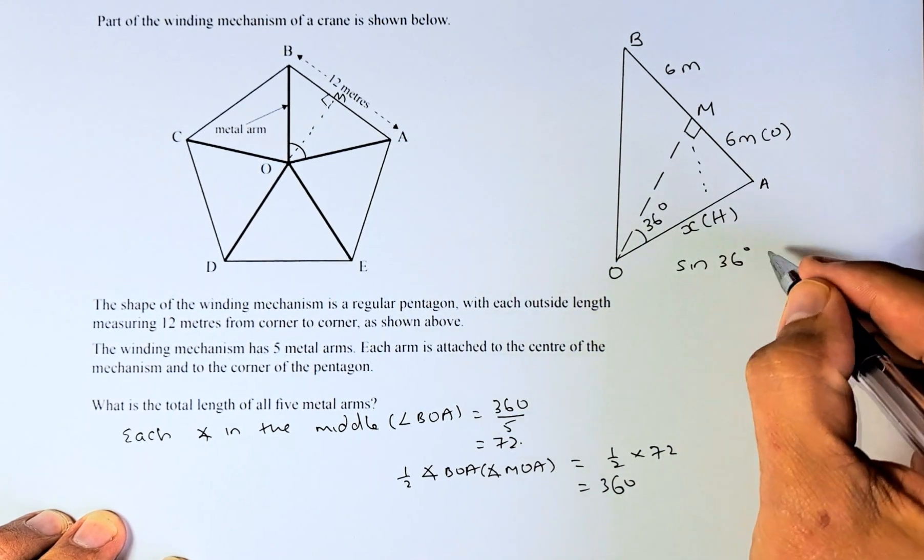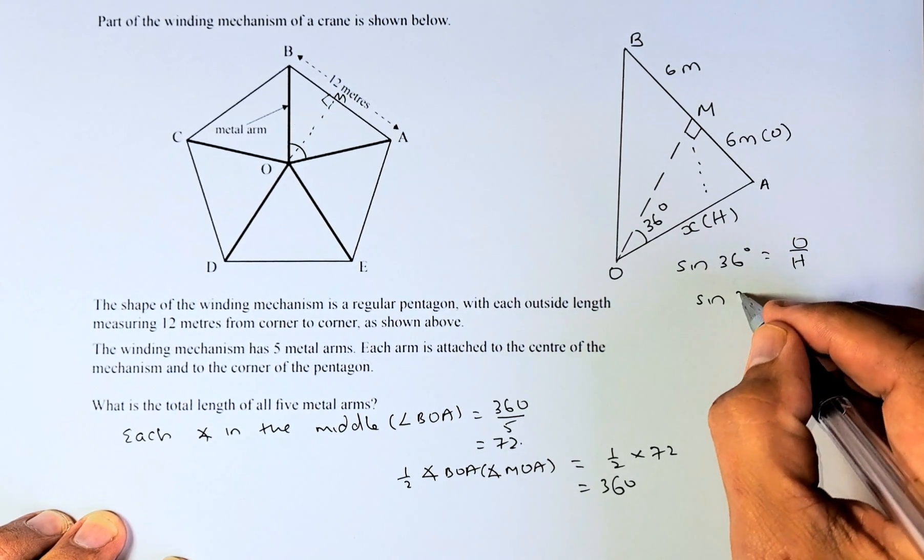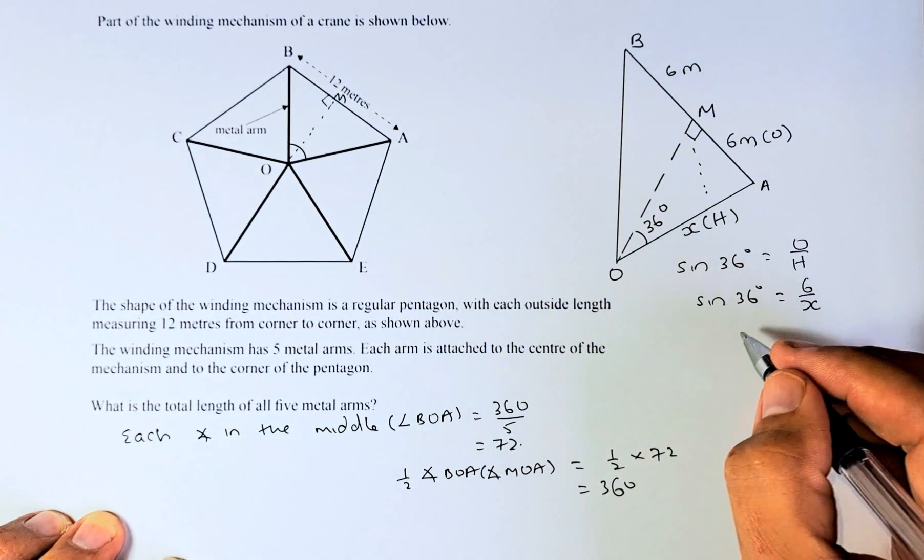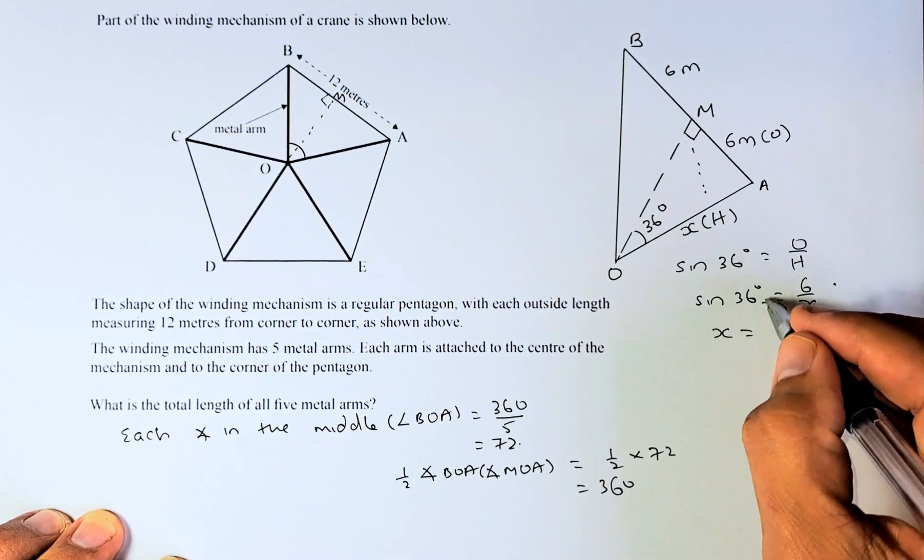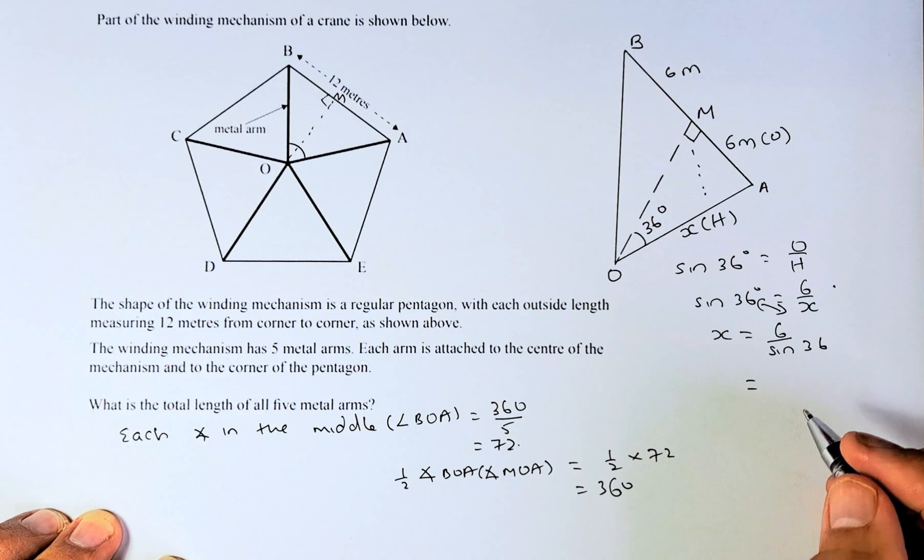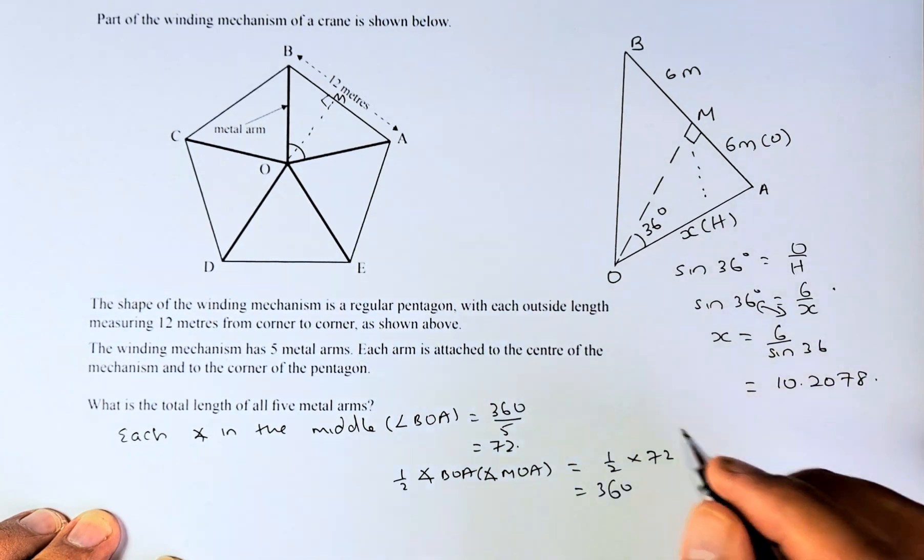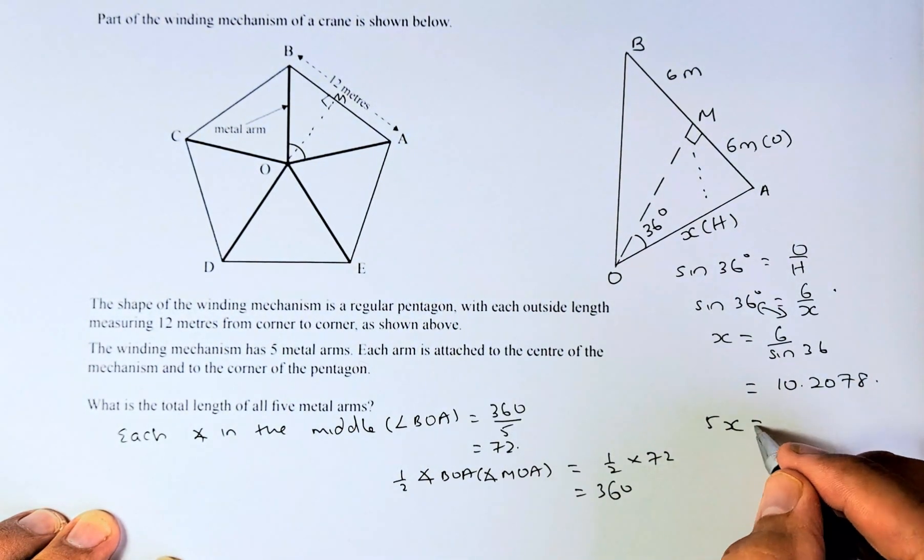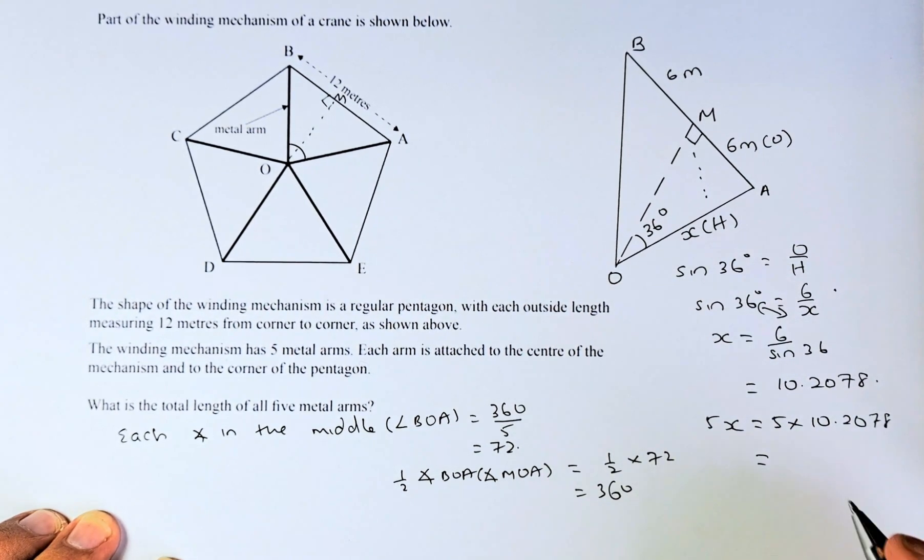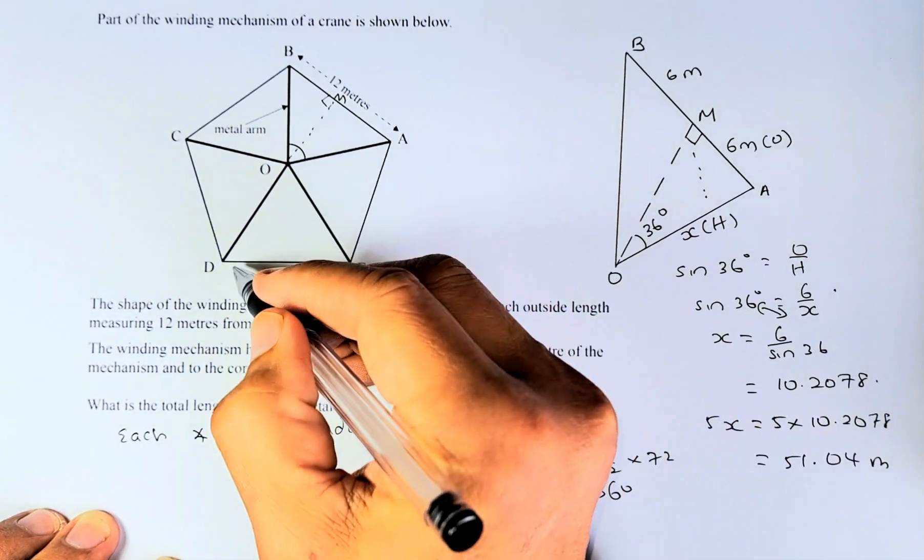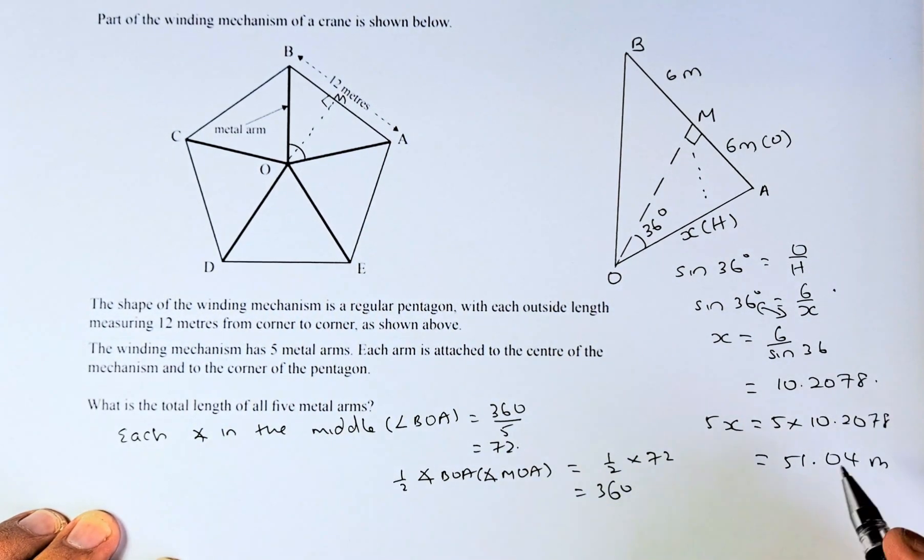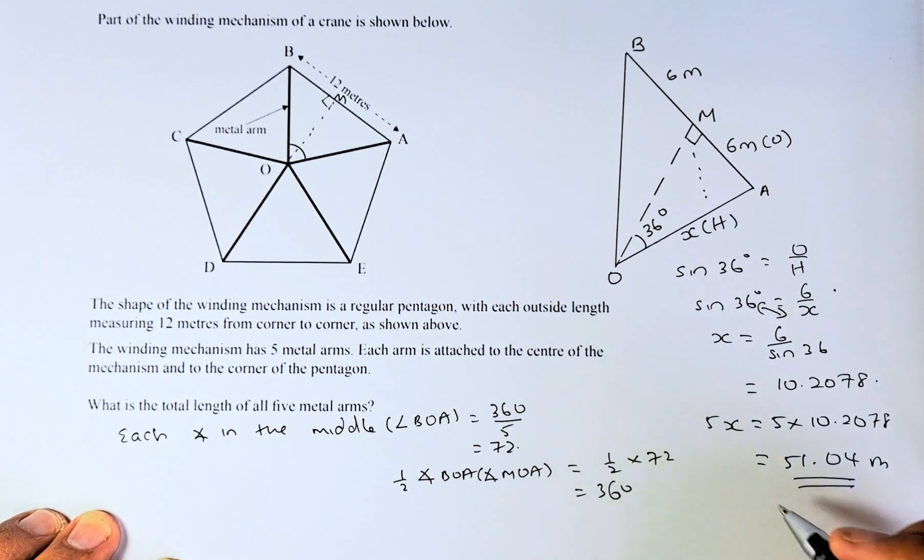Sine 36 equals to O over H. So it is going to be sine 36 equals to opposite which is 6 over X. To calculate your hypotenuse, the OAX is going to be, you swap the places, 6 over sine 36. Put in your calculator and the answer is going to be 10.2078. Because there are 5 of this metal thing, so 5 times X is going to be 5 times 10.2078 and the answer is going to be 51.04 meters. So the total of all the 5 metal poles is 51.04 and that is the merit in this question.